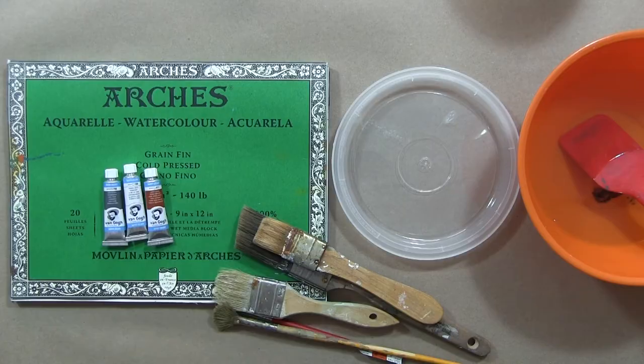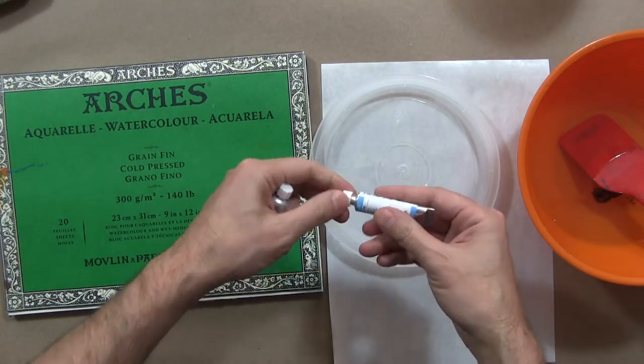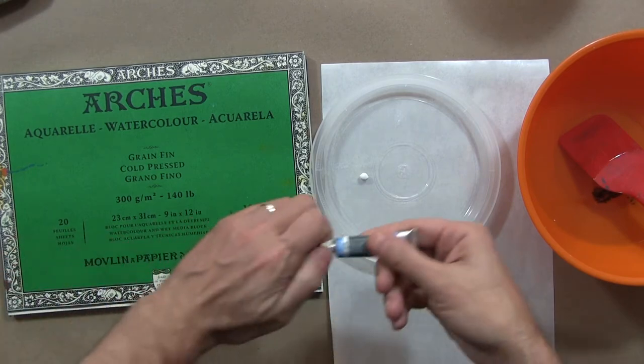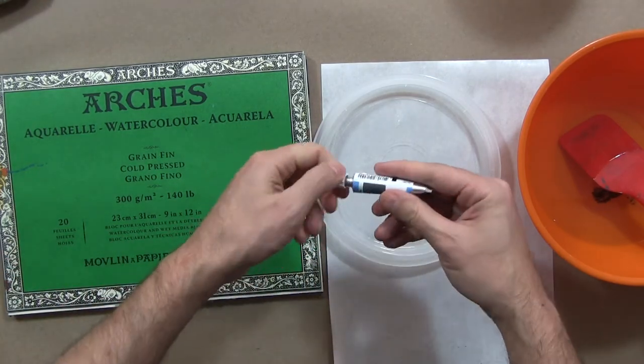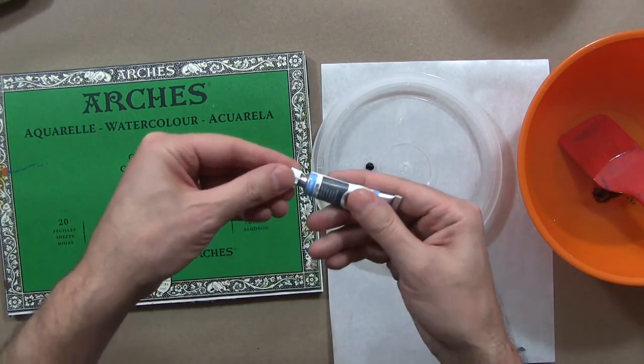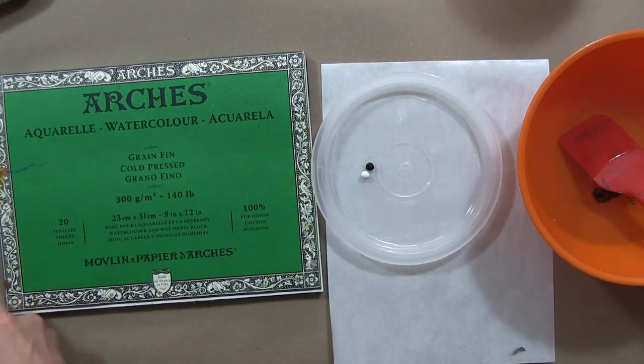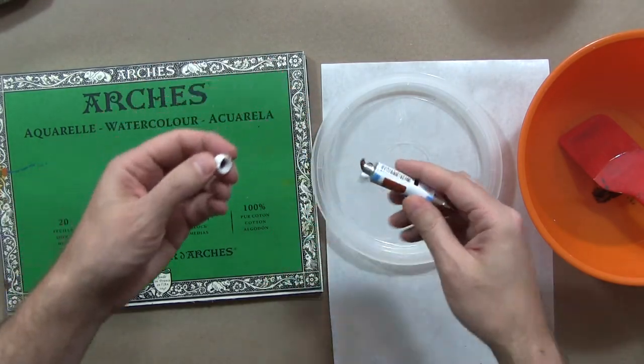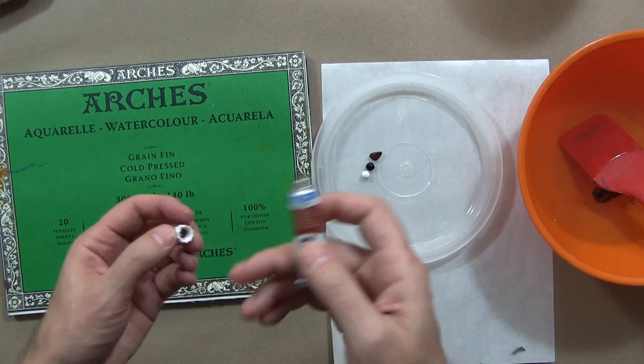I want to start with sort of a neutral, earthy, brownish gray. So I have pink gray here. I just put down titanium white and here's some burnt sienna.